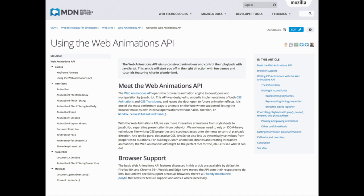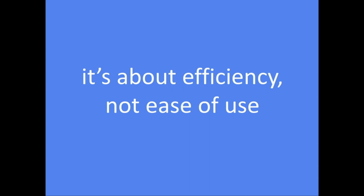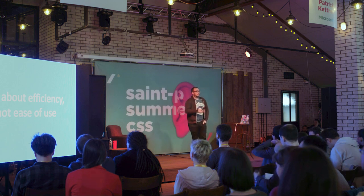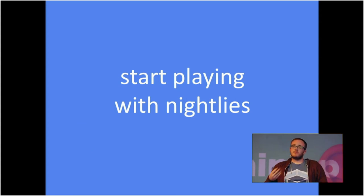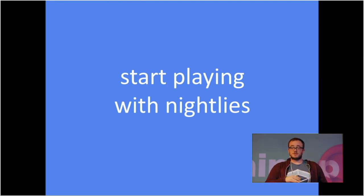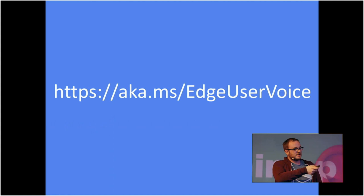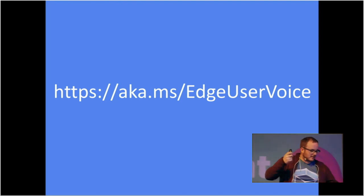Hopefully that was at least somewhat useful. It's kind of confusing and overwhelming, but like I said — it's all about efficiency, nothing to do with ease of use. We at the same time would love to have feedback from people. We want people to start playing with these things because that can actually change the way these APIs are used. The animation worklet was scrapped because developers said 'this is crap.' If you play with nightlies and early-stage browsers and especially these new APIs, you can change the way the web works. At Edge specifically, you can go to the user voice URL to complain or make suggestions about anything in Edge — not Internet Explorer, because it's dead.